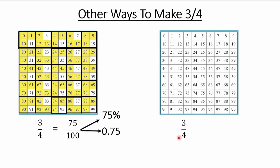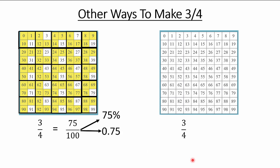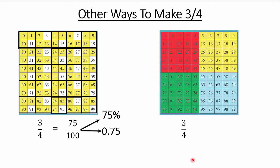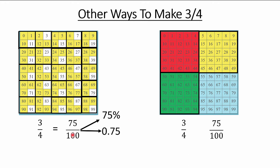What's the second method? Instead of making little groups, take the entire hundred-tile grid and split it into four equal parts — one big grid with four big sections. Out of those four sections, color three of them. Count the little ones now: we've got 75 little ones out of 100 in total. Same answer as before — they're equivalent amounts.